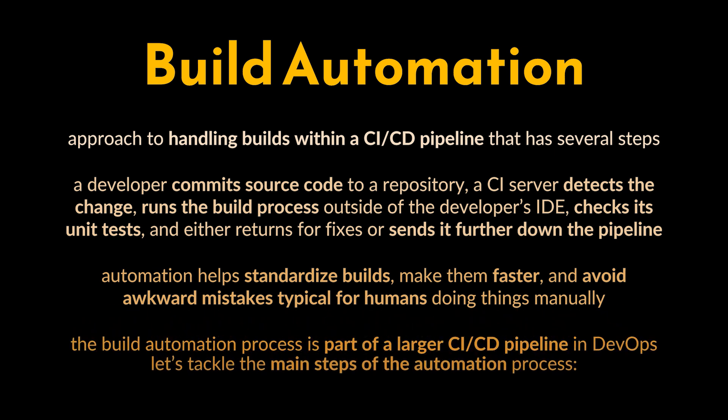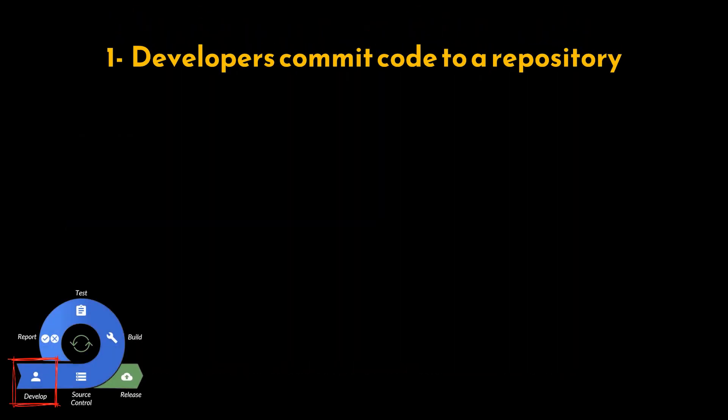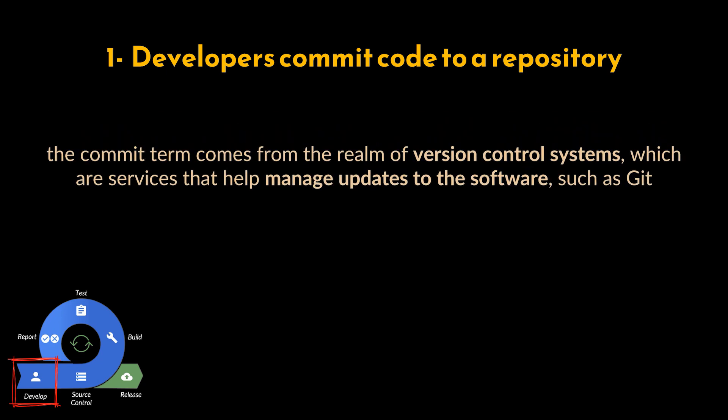The build automation process is part of a larger CI/CD pipeline in DevOps. Step one: a developer commits code to a repository. The term 'commit' comes from version control systems — services that help manage updates to software, such as Git. A code commit means an engineer sends new code to a repository residing inside one of those VCS.